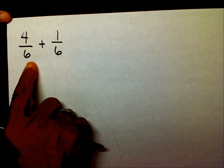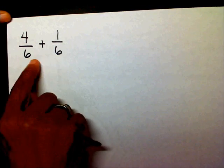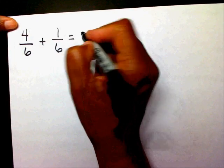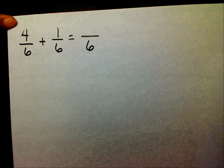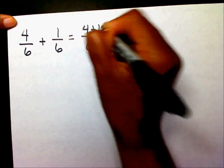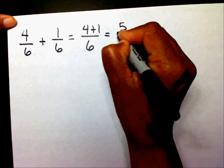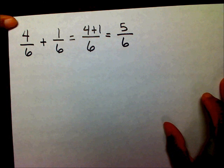So when you already have the same denominator, the only thing you need to do is just bring your denominator over and add your numerators. 4 plus 1. And we know that 4 plus 1 is 5 and bring your 6 over.